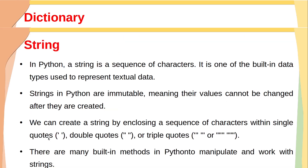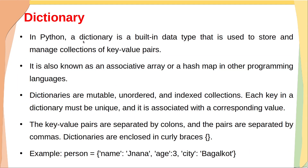To implement this program, we are going to use a dictionary. In Python, a dictionary is a built-in data type used to store and manage a collection of key-value pairs. It is also known as an associative array or a hash map in other programming languages. Dictionaries are mutable, unordered, and indexed collections. Each key must be unique and is associated with a corresponding value. Key-value pairs are separated by a colon, pairs separated by commas, and the whole dictionary is enclosed in curly braces.